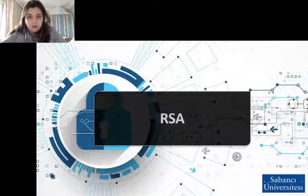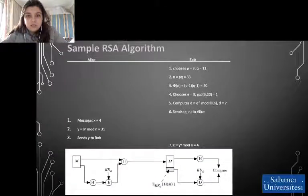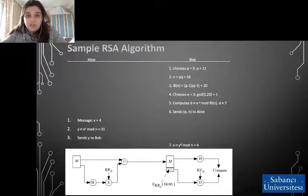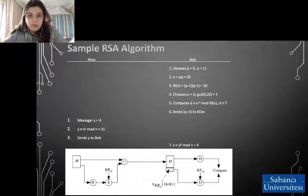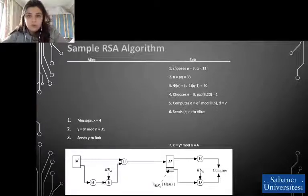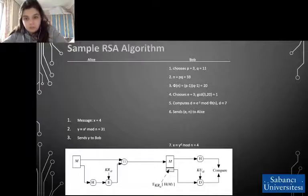Let's talk about RSA — the Rivest–Shamir–Adleman algorithm. RSA is one of the oldest asymmetric cryptography algorithms. The idea of RSA is based on the fact that it is difficult to factorize a large integer. The public key consists of two numbers, where one number is the multiplication of two large prime numbers, and the private key is also derived from those same two prime numbers. So, if somebody can factorize that large number, the private key is compromised. Therefore, encryption strength totally lies on the key size — if we double or triple the key size, the strength of the encryption increases exponentially. RSA keys are typically 1024 or 2048 bits long, but experts believe that 1024-bit keys could be broken in the near future, though until now it seems to be an infeasible task.